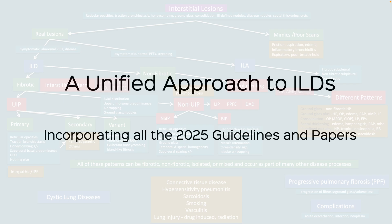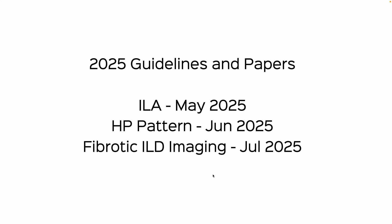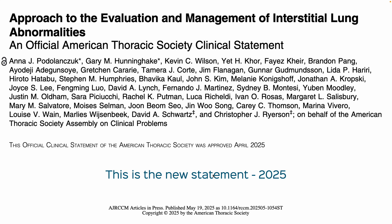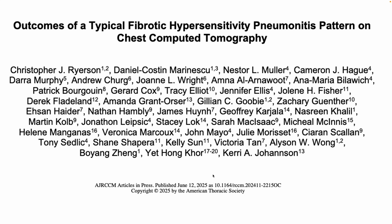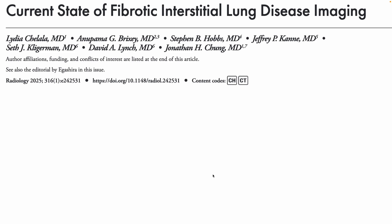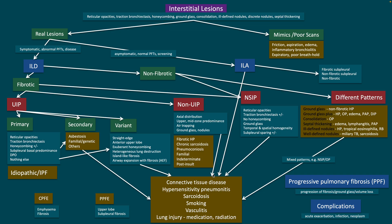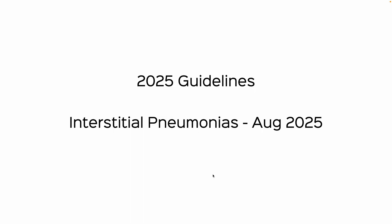Welcome to the unified approach to ILDs, which now incorporates all the 2025 guidelines and papers. I'm redoing this video because of the guidelines that dropped two days ago. We had already incorporated the ILA guidelines, the papers on HP and fibrotic ILD imaging — the ILA paper in 2025, the new understanding of the fibrotic HP pattern, and the overarching article on how to approach fibrotic ILDs. I had created a flow chart based on that.